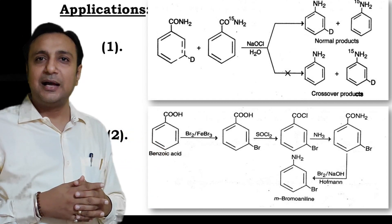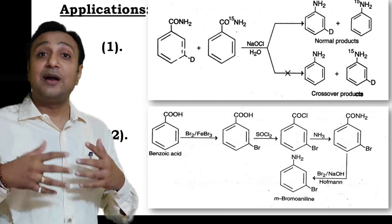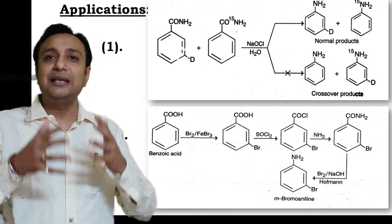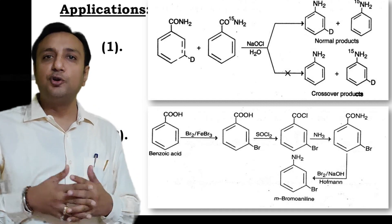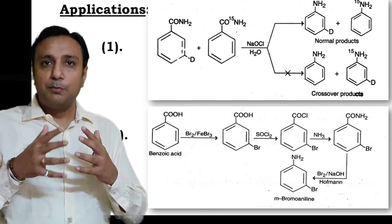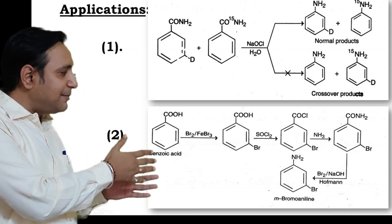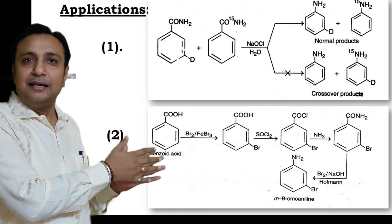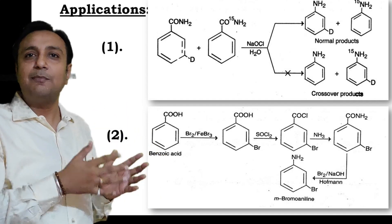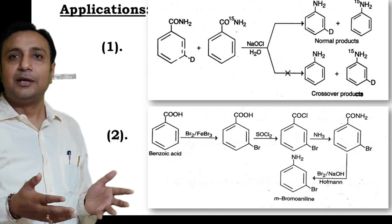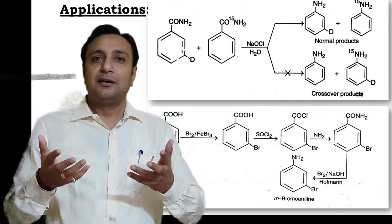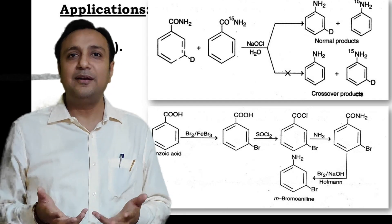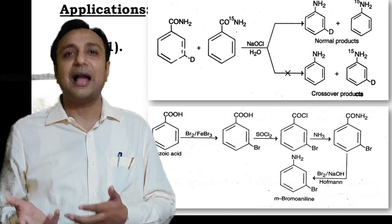Meta-bromo benzoyl chloride reacts with ammonia to form meta-bromo benzamide, and meta-bromo benzamide on reaction with NaOBr produces meta-bromo aniline. These are reactions showing different applications of the Hoffmann rearrangement.